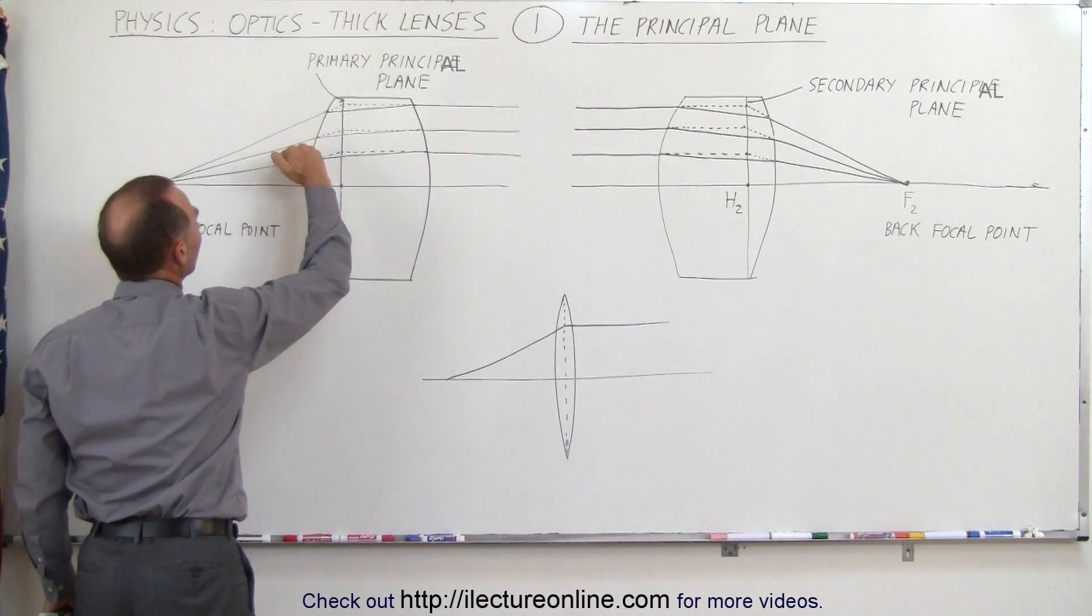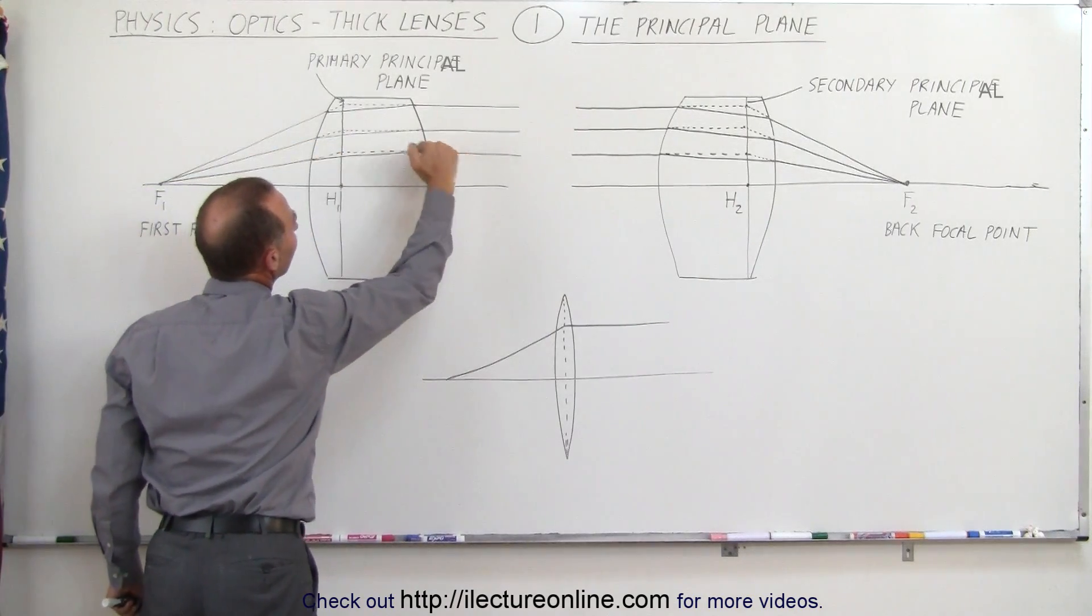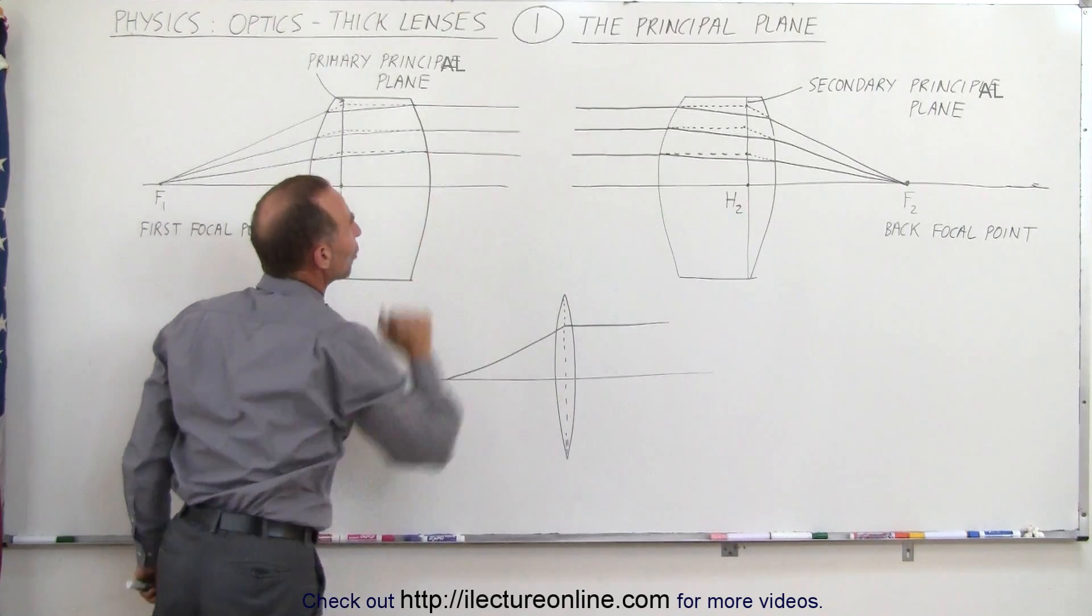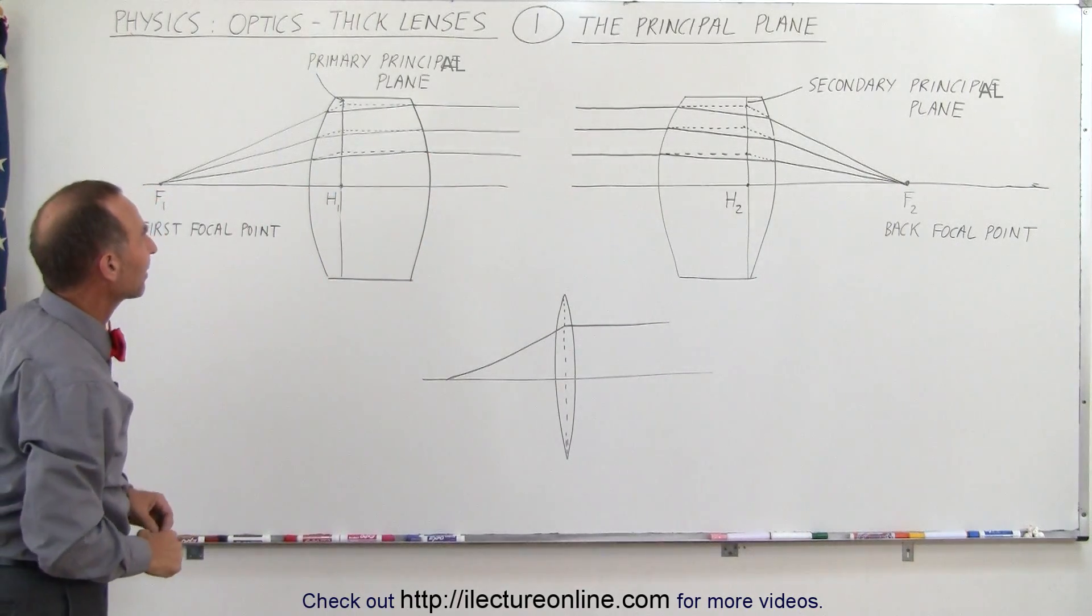So they'll travel in this direction, bend, bend again, and now you can see that they're going parallel to the optical axis as they emerge from the back side of the lens.